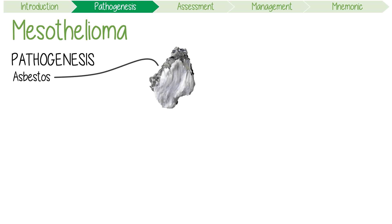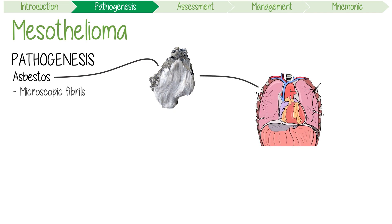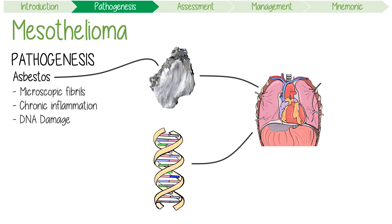Asbestos is the primary causative factor because its fibres are composed of microscopic fibrils that get stuck in the lungs or other organs and cause chronic inflammation. This ongoing irritation culminates in DNA damage, which might lead to malignant transformation.